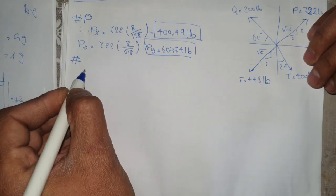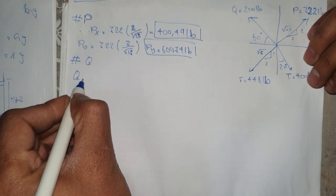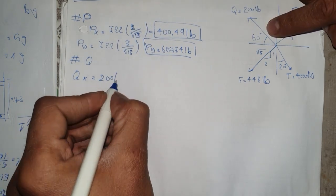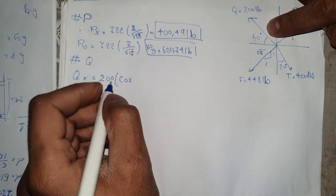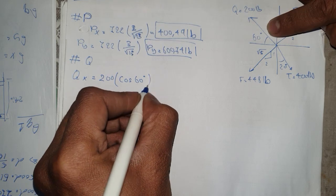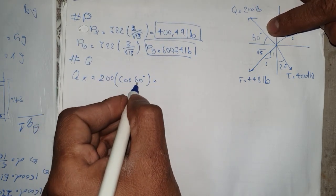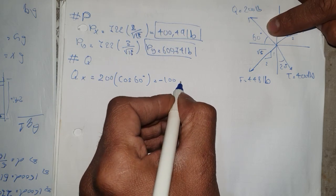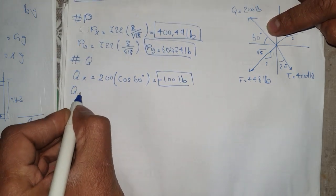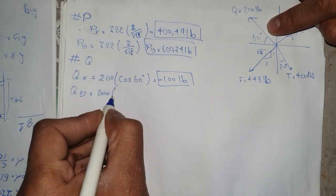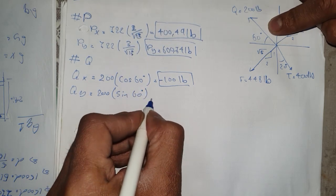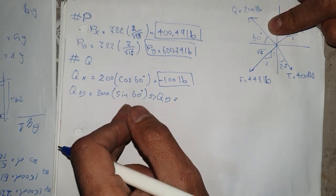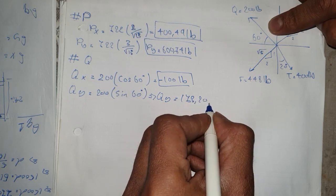For Q, Qx equals 200 lb times cosine of 60 degrees. Since it is in the second quadrant, we get Qx equal to minus 100 lb. For Qy, it is 200 times sine of 60 degrees, giving Qy equal to 173.20 lb.